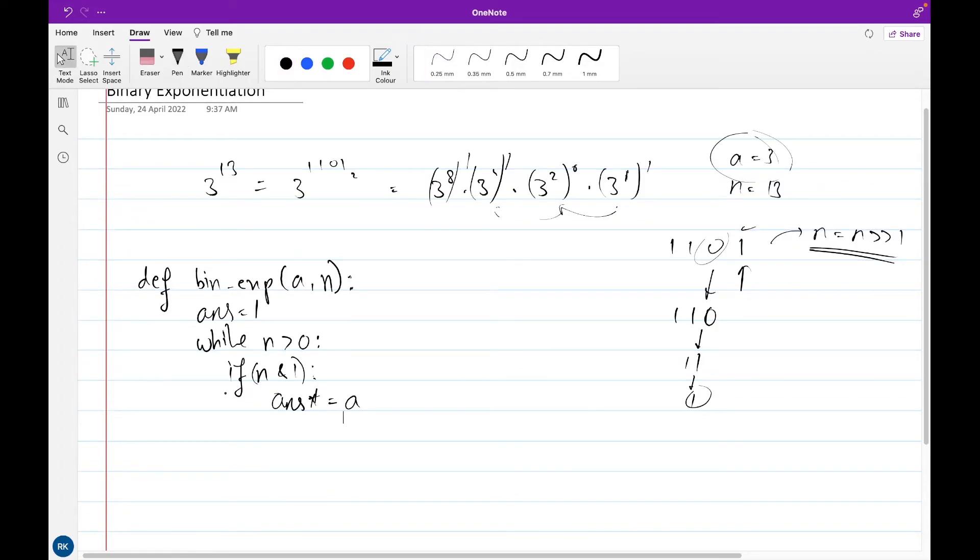And if it is not, we will just skip to the other part of the loop. That is a times equals a, a becomes a square, and n loses its last bit.